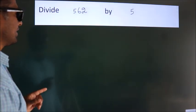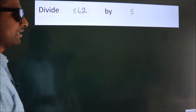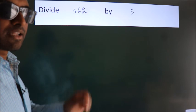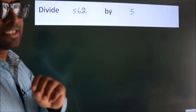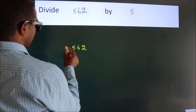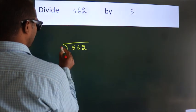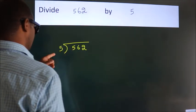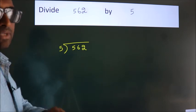Divide 562 by 5. To do this division, we should frame it in this way. 562 here, 5 here. This is your step 1.